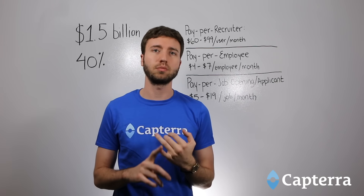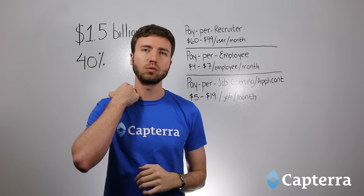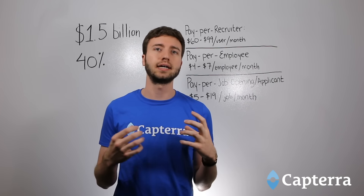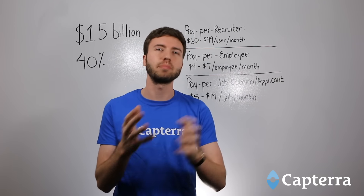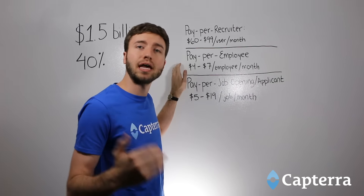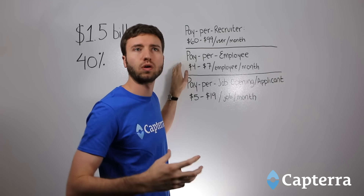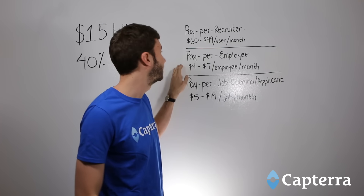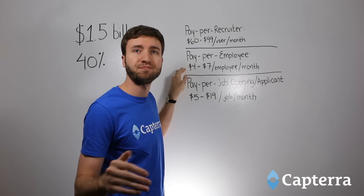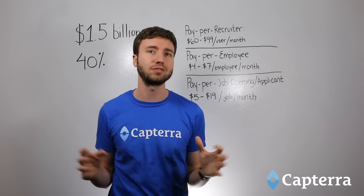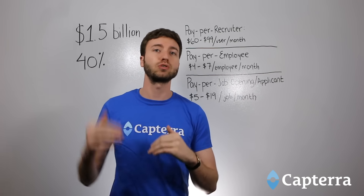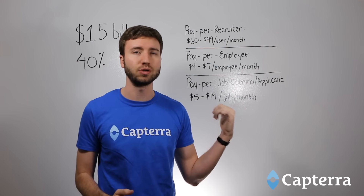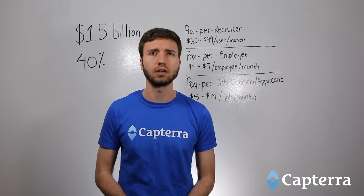The second pricing model, which is a little less common, is pay per employee. This uses the size of your organization as a kind of proxy for what you should be paying for the software — so rather than paying for people actually using the software, you're paying based on how many full-time employees you have at your company. You can expect to pay around $4 to $7 per employee per month to start. This will change as you scale up; if you've got thousands or tens of thousands of employees, those numbers can come down dramatically to around $0.20 per employee per month.